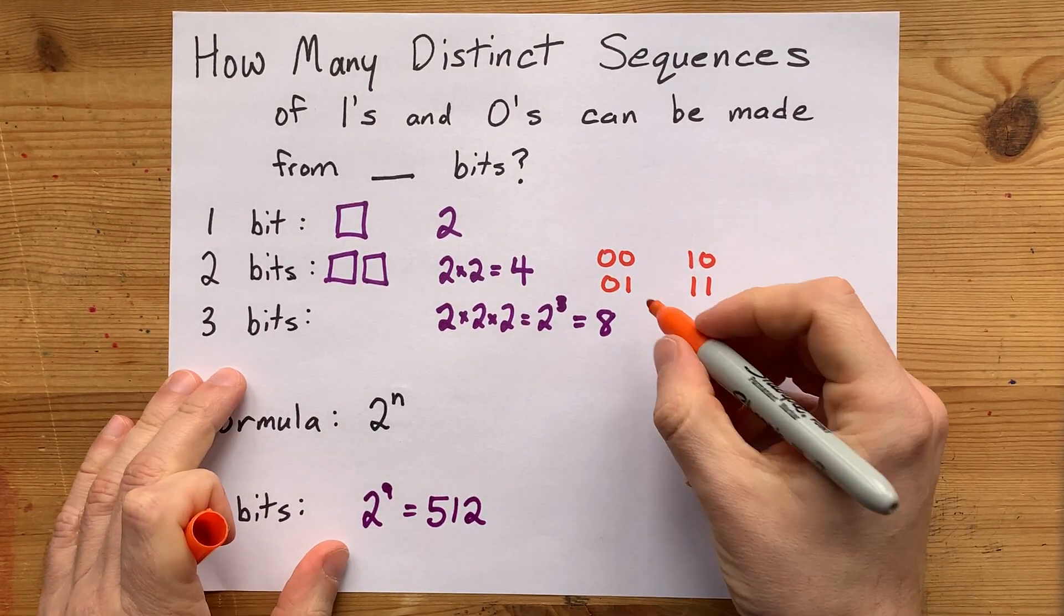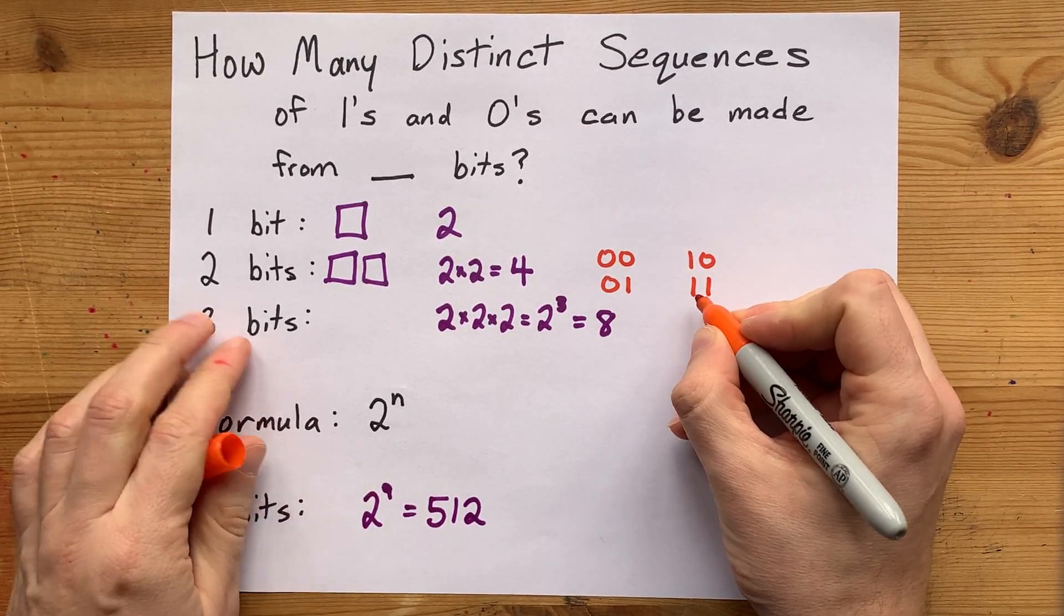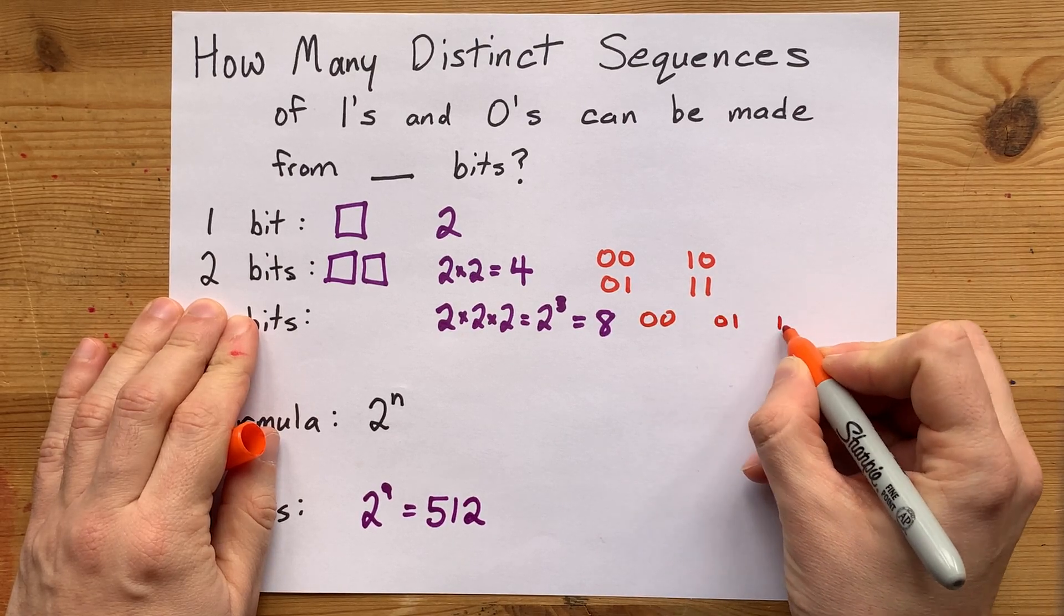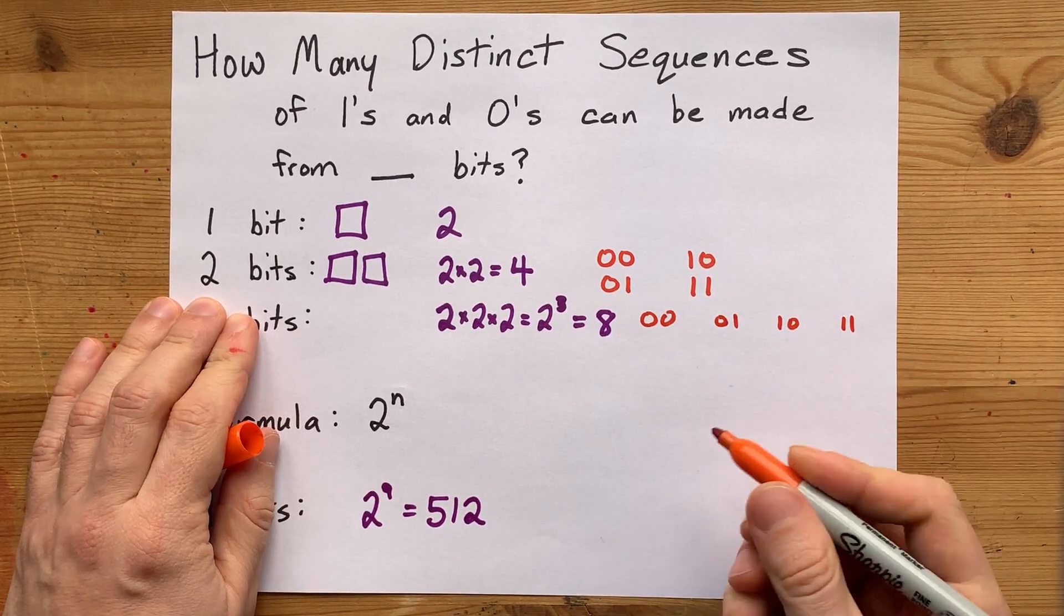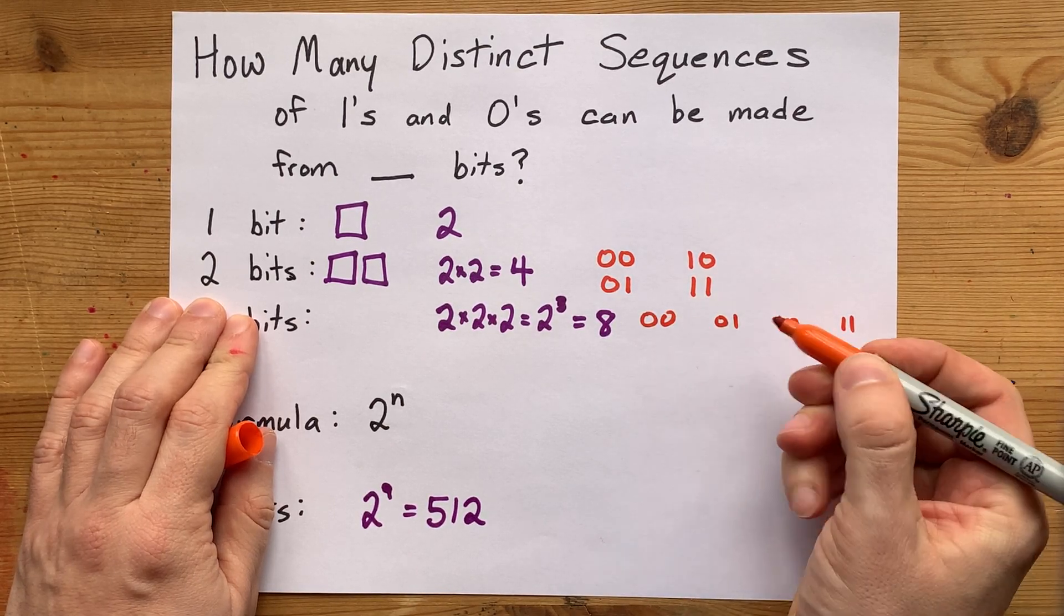Now, just to emphasize why it's doubling, if you have these four options for the first two bits - 0,0, 0,1, 1,0, and 1,1 - you now need to add on a third bit to that.